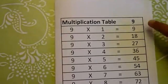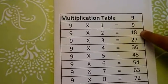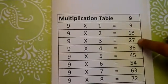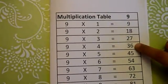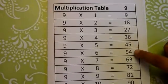9 1s are 9, 9 2s are 18, 9 3s are 27, 9 4s are 36, 9 5s are 45,